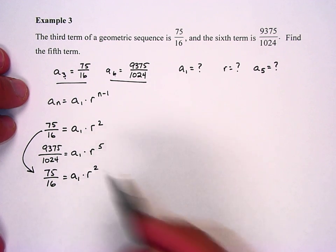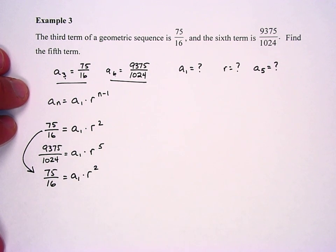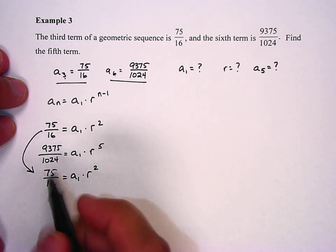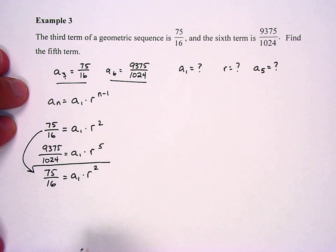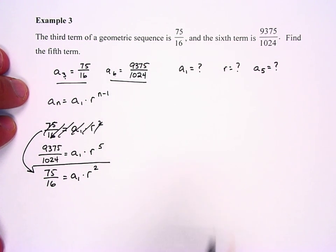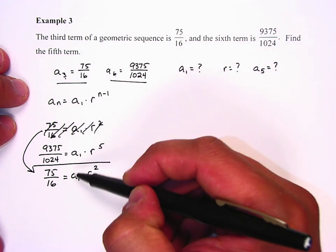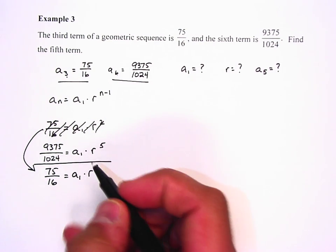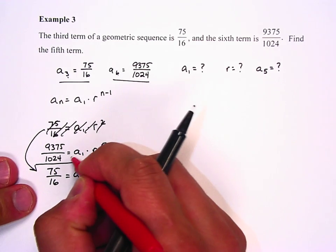The reason I'm going to do that is because when we have a system of equations like this, we need to solve for a1 or r. We're going to divide these two equations. And the reason we do that, I'm just going to cancel that out, is here, what's a1 divided by a1? Well, those a sub 1s cancel out.